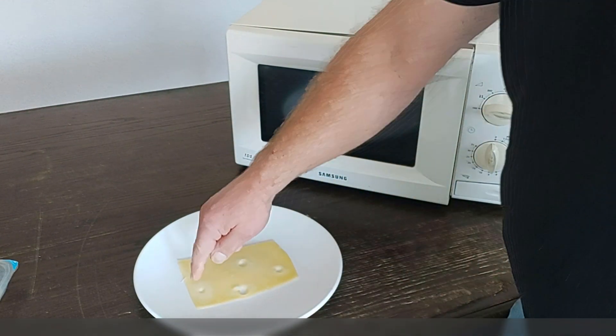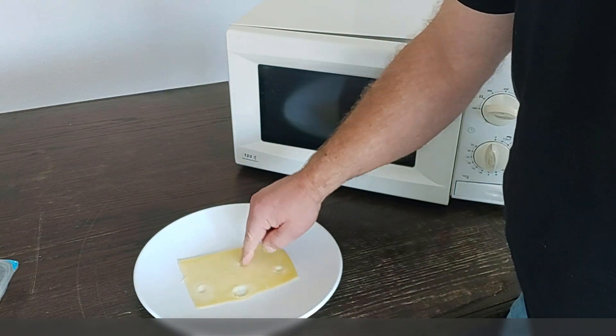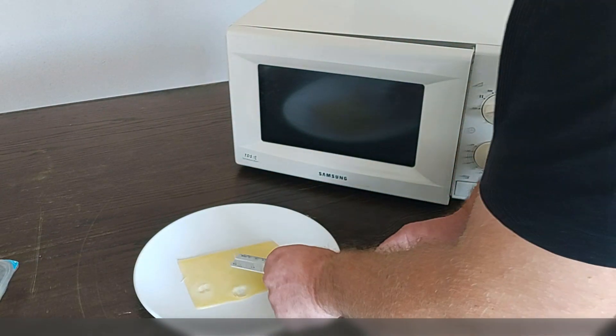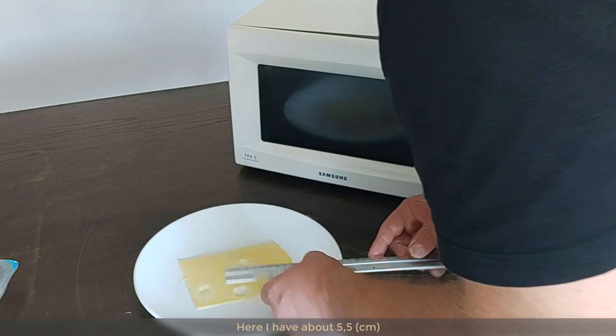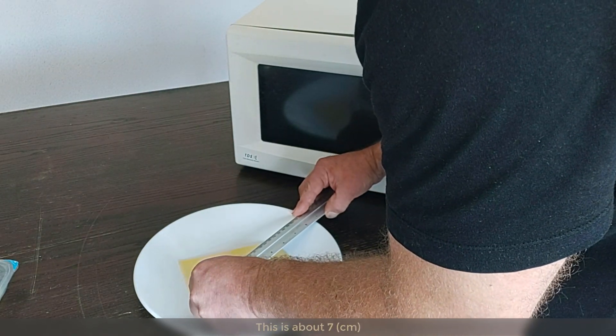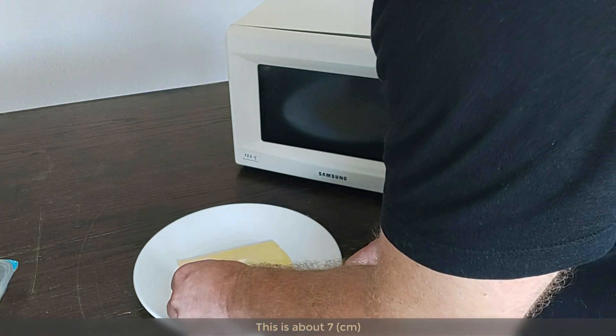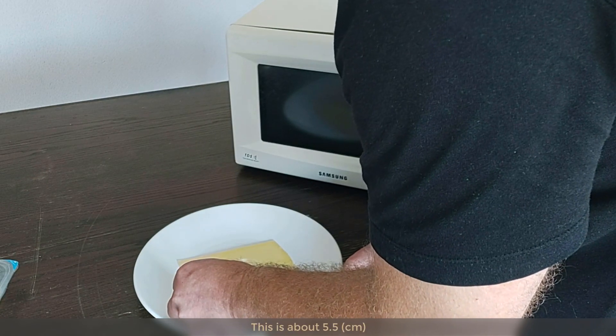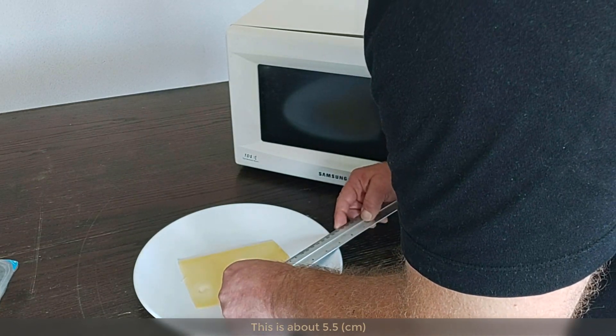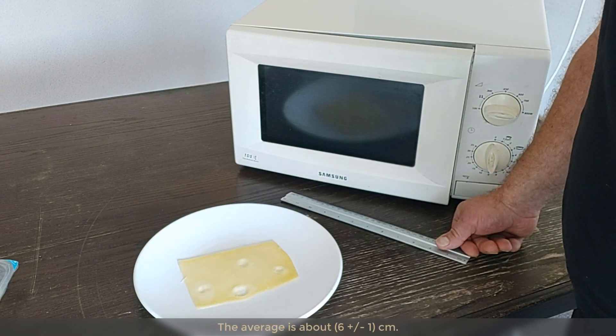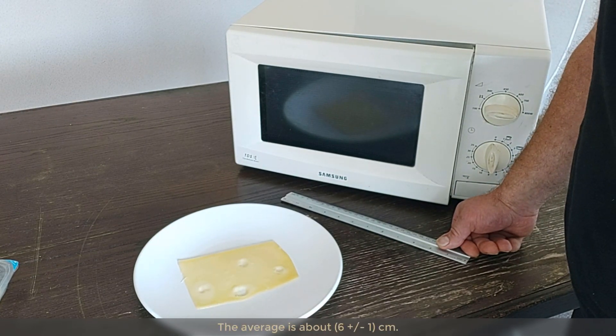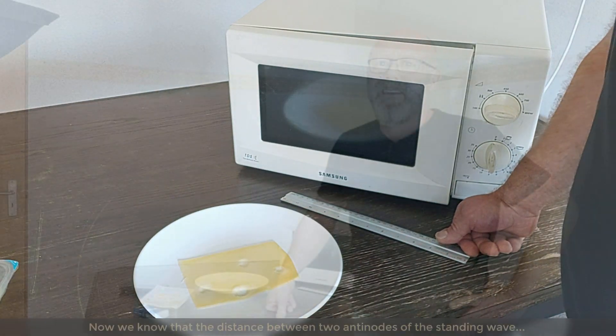I take my ruler, and I'm going to consider the distance here, measure all these distances. So, here I have about five and a half, this is about seven, this is about five and a half, and this is around six and a half. So, if I take the average, I'm at six plus minus one. Something like this.